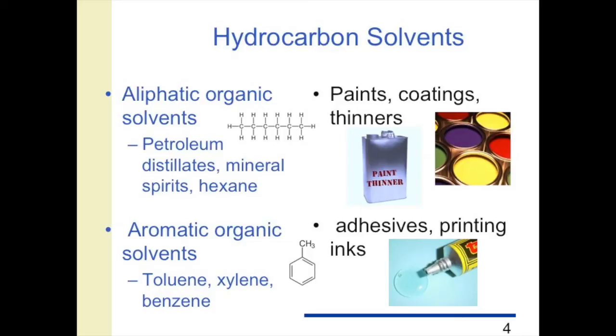The second type is aromatic solvents, based on a benzene ring. You see here the chemical structure for toluene. They might be used in things like adhesives and printing inks.